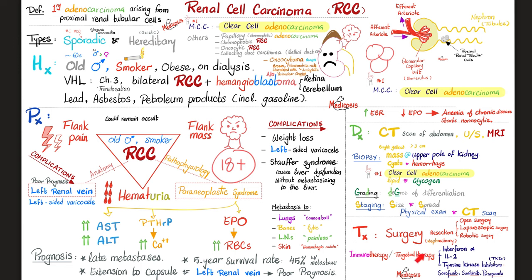Prognosis depends on metastasis. Most patients will have no metastasis. If metastasis happens, it's usually late. But if it does occur, it decreases the five-year survival rate to about 45%, meaning half of RCC patients with metastasis will not make it past five years. If the cancer extends to the capsule or the left renal vein, it carries poor prognosis.